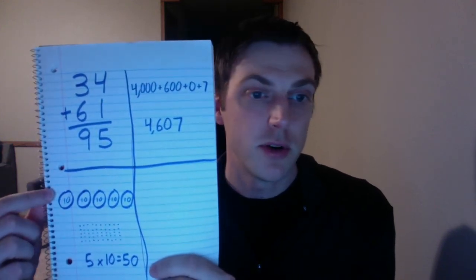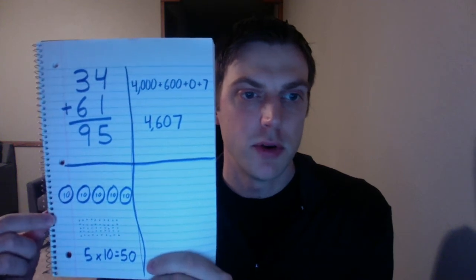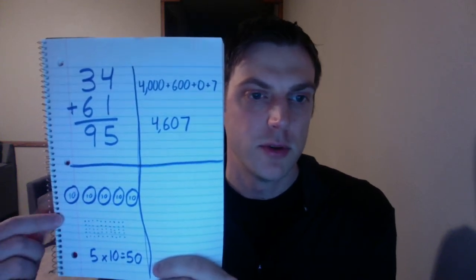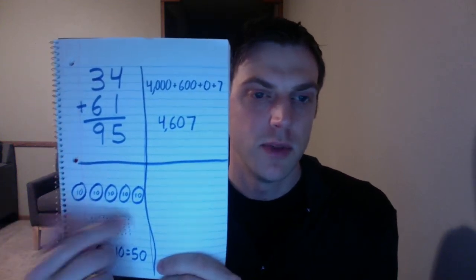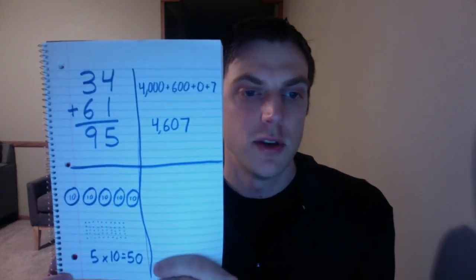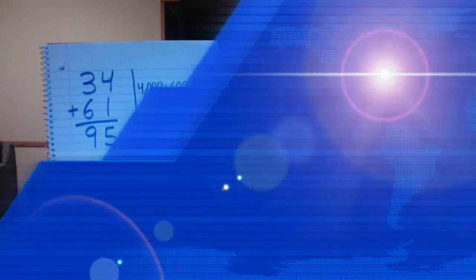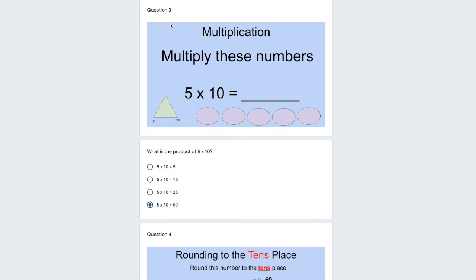You also maybe could draw an array. So if you look down below, you could have 5 rows with 10 in each row. No matter what strategy you use, 5 times 10 will equal 50. We're back in our Google Forms doc, looking at question 3. Again, the question was, what is the product of 5 times 10? I go down and I find the equation that has the correct response, 5 times 10 equals 50. I make sure to click that so my teacher knows I have the correct answer.